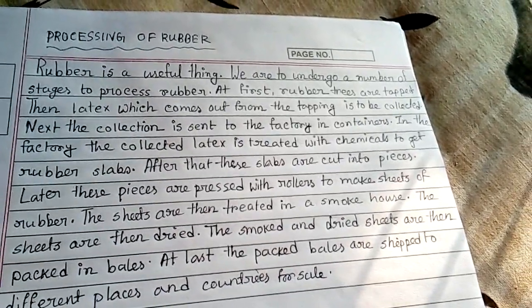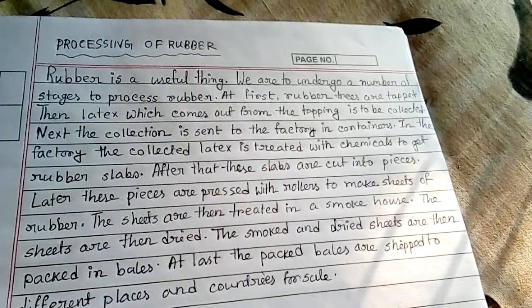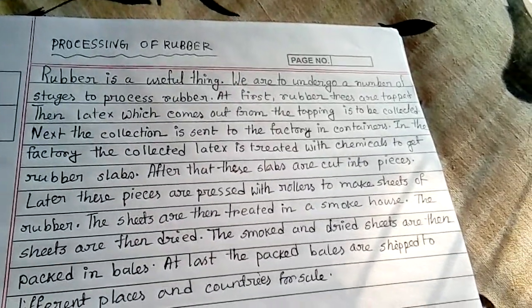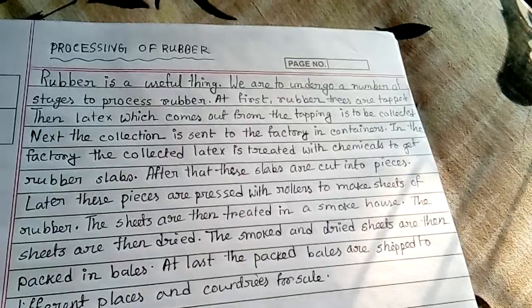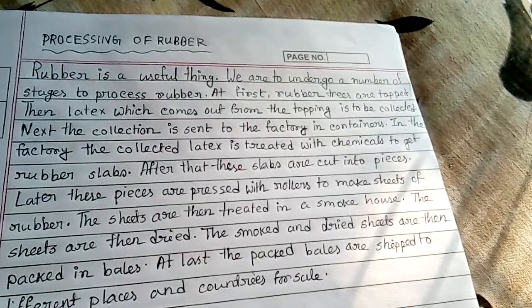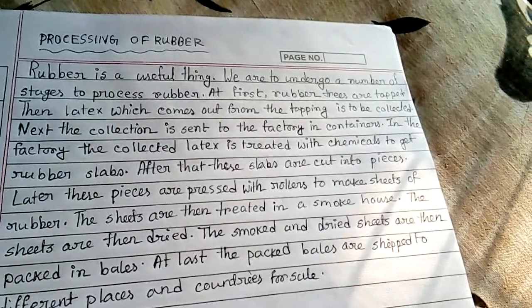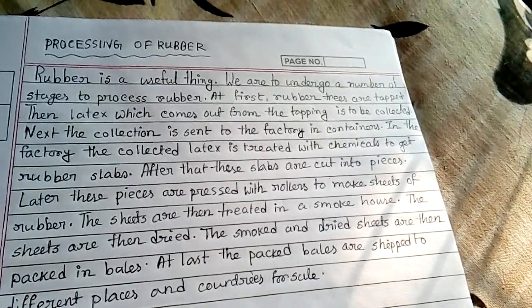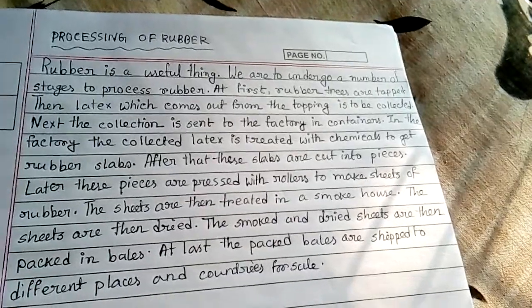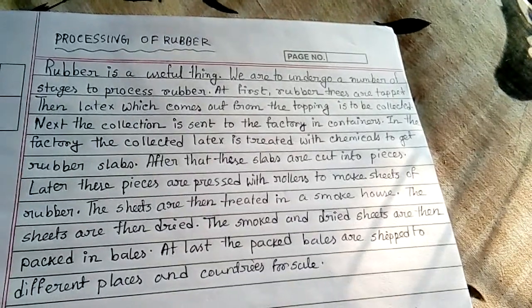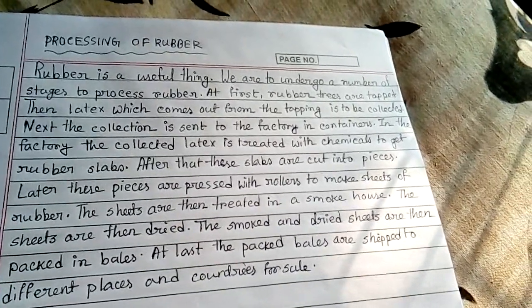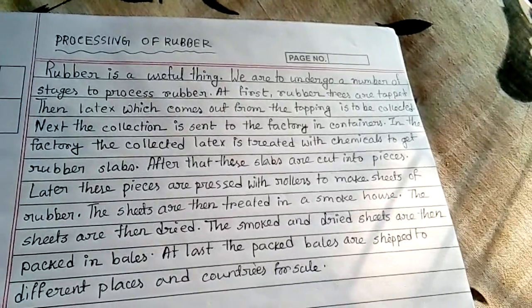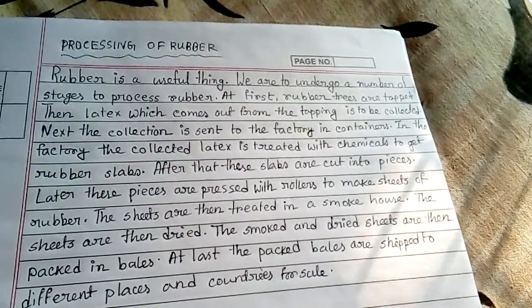After that, those slabs are cut into pieces. Later, those pieces are pressed with rollers to make sheets of rubber. The sheets are then treated in a smokehouse and then dried.